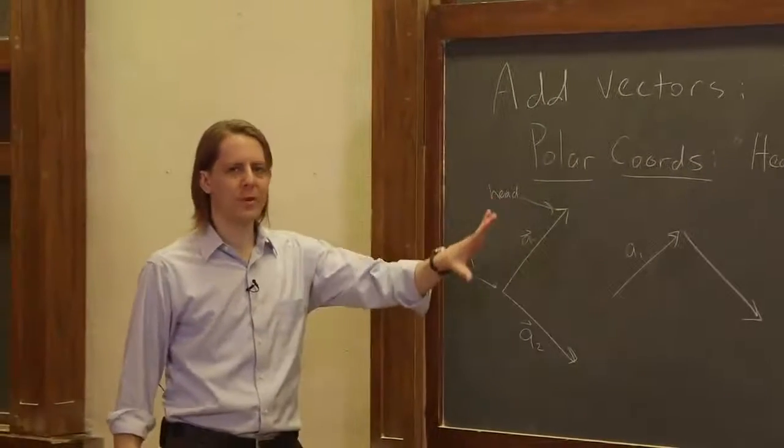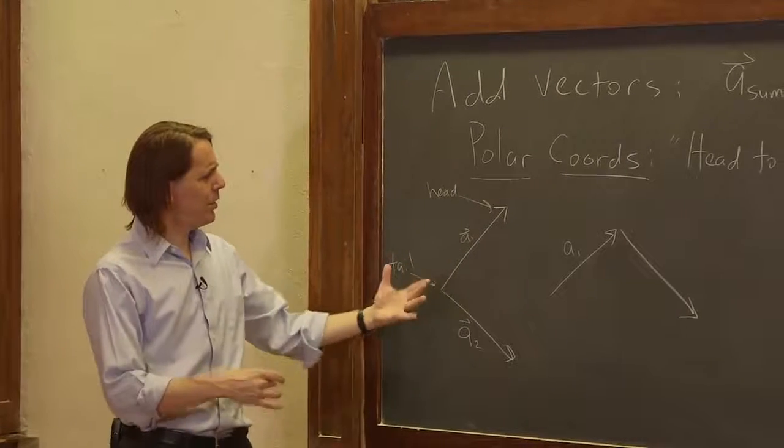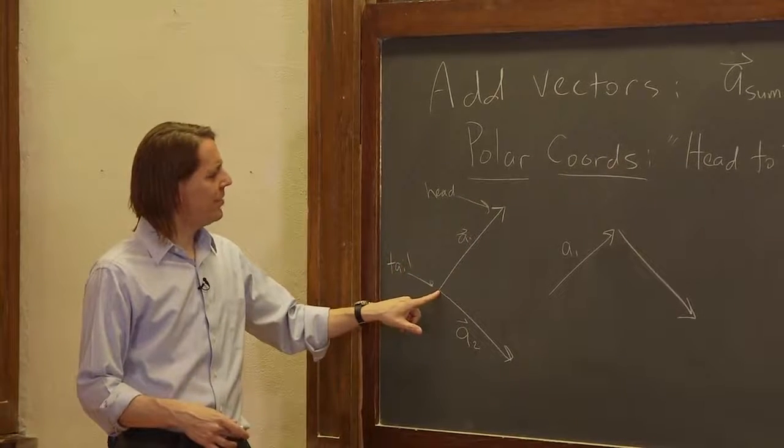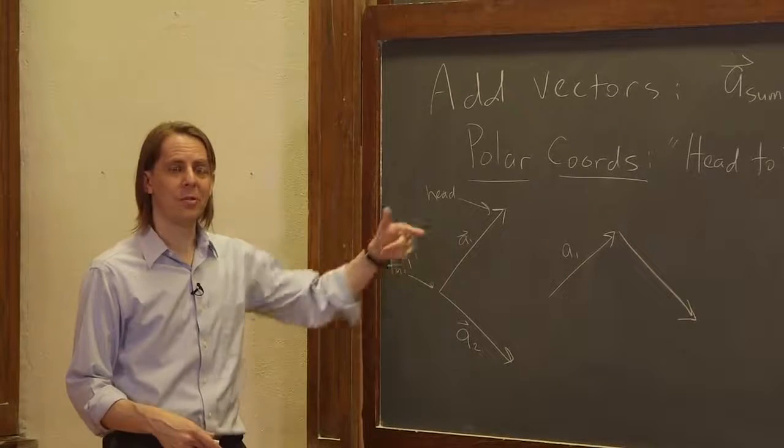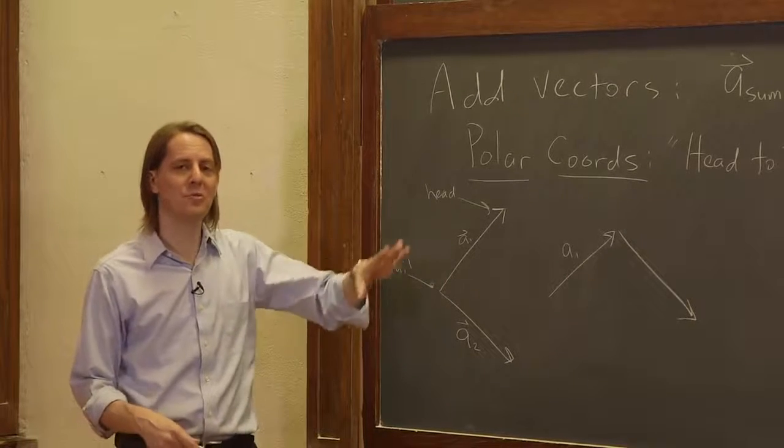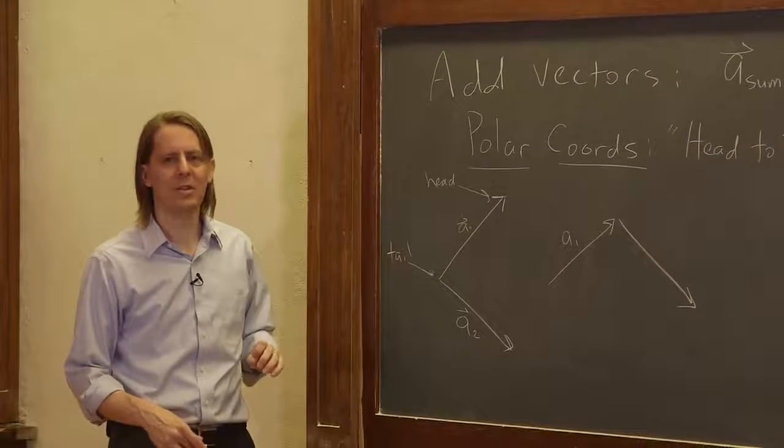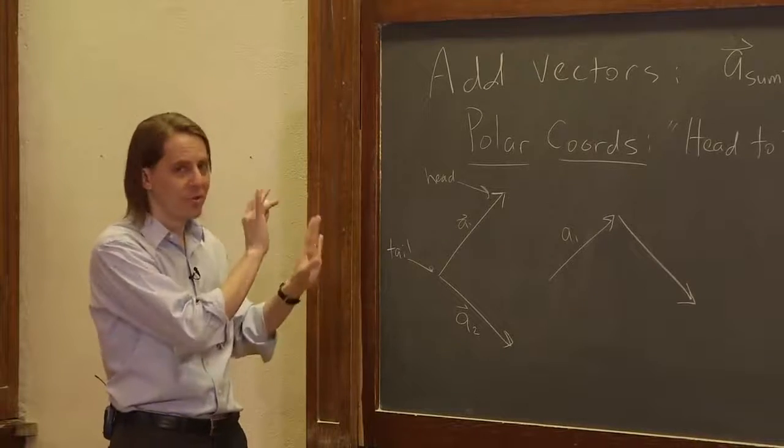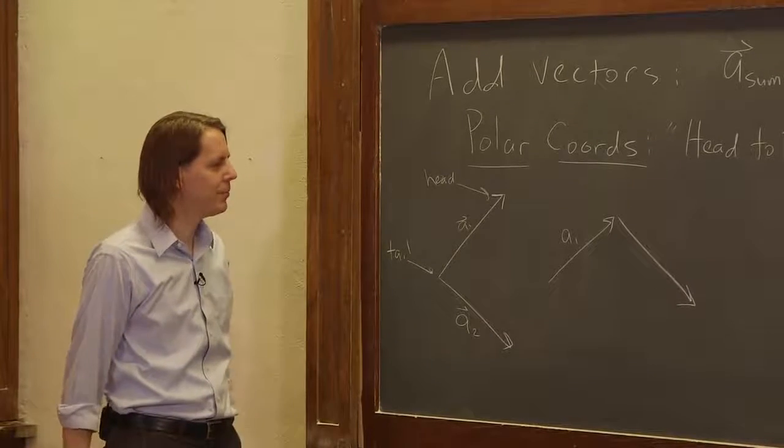You can often move vectors around in physics problems. So you might say, well, why can you move it? Isn't this the origin? Well, this is the origin in space. These are acceleration vectors, so you can actually move them around wherever is convenient, usually. If you're doing position vectors, then it gets more problematic.